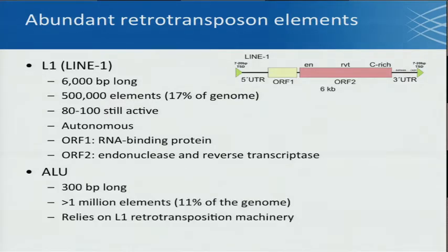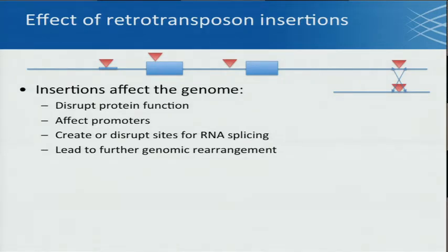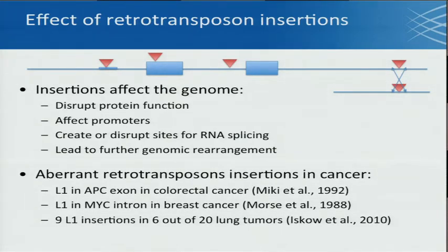The ALU element is 300 base pairs long, composes 11% of the genome, and relies on the L1 retrotransposition machinery. When a retrotransposon inserts itself into the genome, it can have multiple effects depending on where it lands: it can disrupt protein function if it lands in an exon, affect a promoter and alter gene expression, create or disrupt sites for RNA splicing, and due to homologous recombination, even in an intergenic region it can lead to further genomic rearrangement. Not surprisingly, retrotransposons have been implicated in cancer.